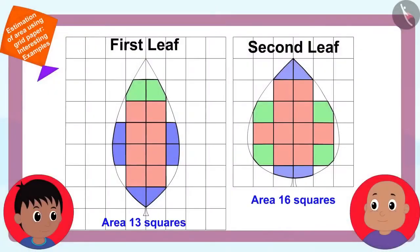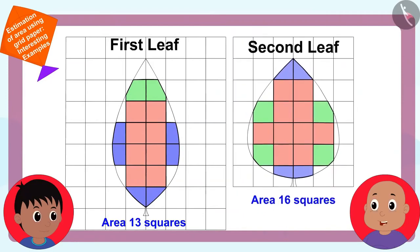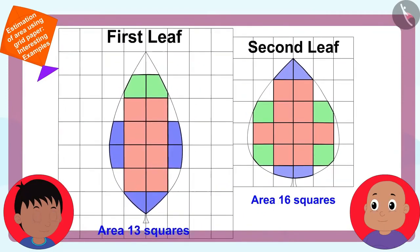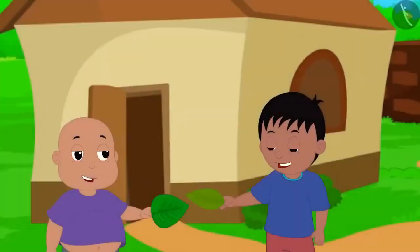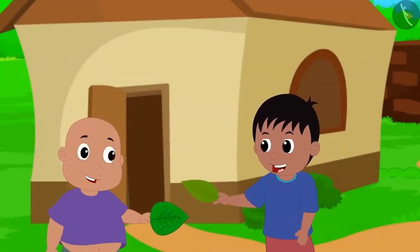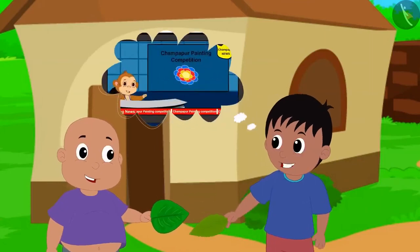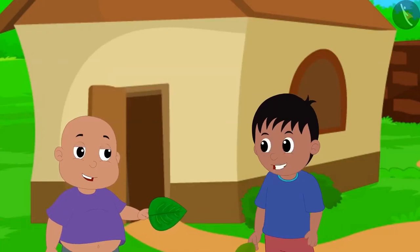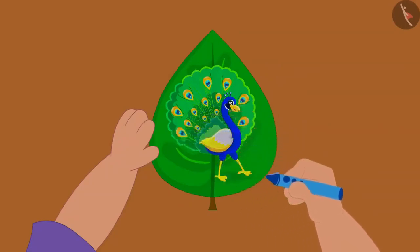Bablu also found the answer. There are sixteen squares in the area of the second leaf and thirteen squares in the area of the first leaf, meaning the second leaf is larger than the first leaf. Raju said well done, and noted that Bablu also learned to find area using a grid paper. They quickly took part in the competition by painting a beautiful picture on the bigger leaf, and the two friends made a beautiful painting on the second leaf.